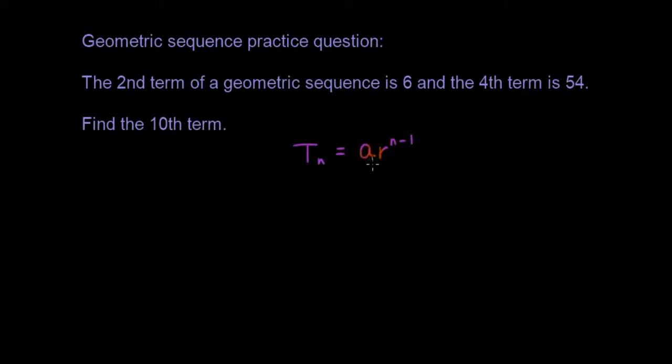Where a is your first term, r is the ratio between each term, and n is the number of the term you're looking for.